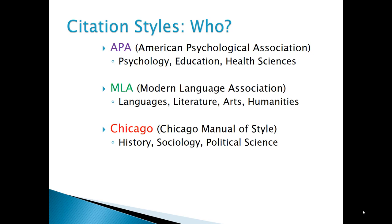Another confusing aspect about citations is that material formats are changing, and researchers need to cite the format of the material in the style used by the profession. For example, when internet websites were developed, each profession had to decide how to cite the new formats, including videos, websites, and blogs, and they are still changing.